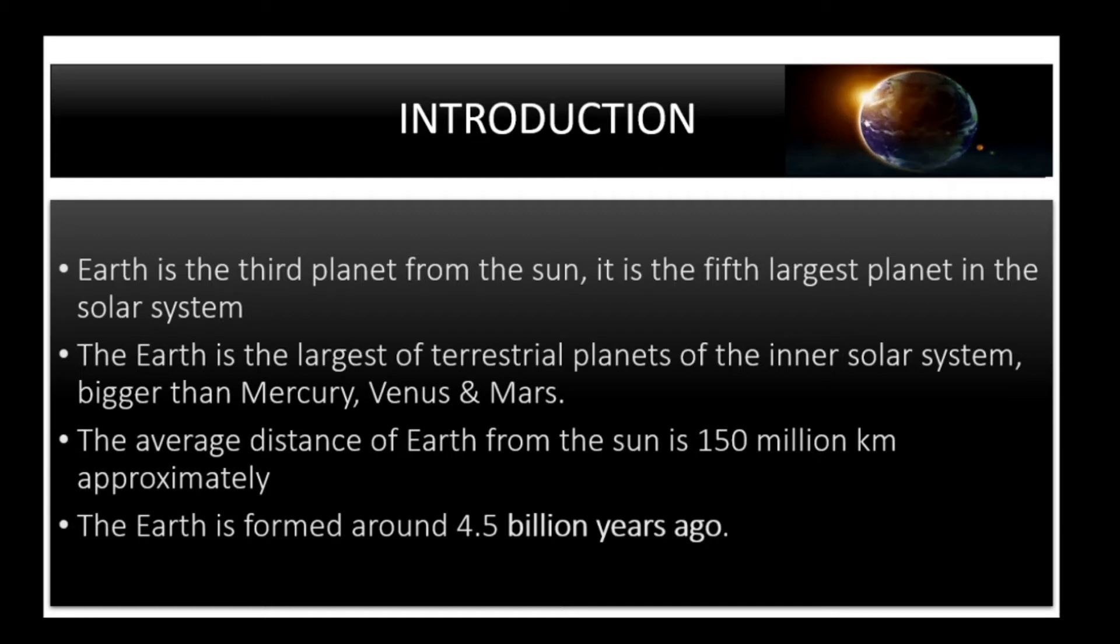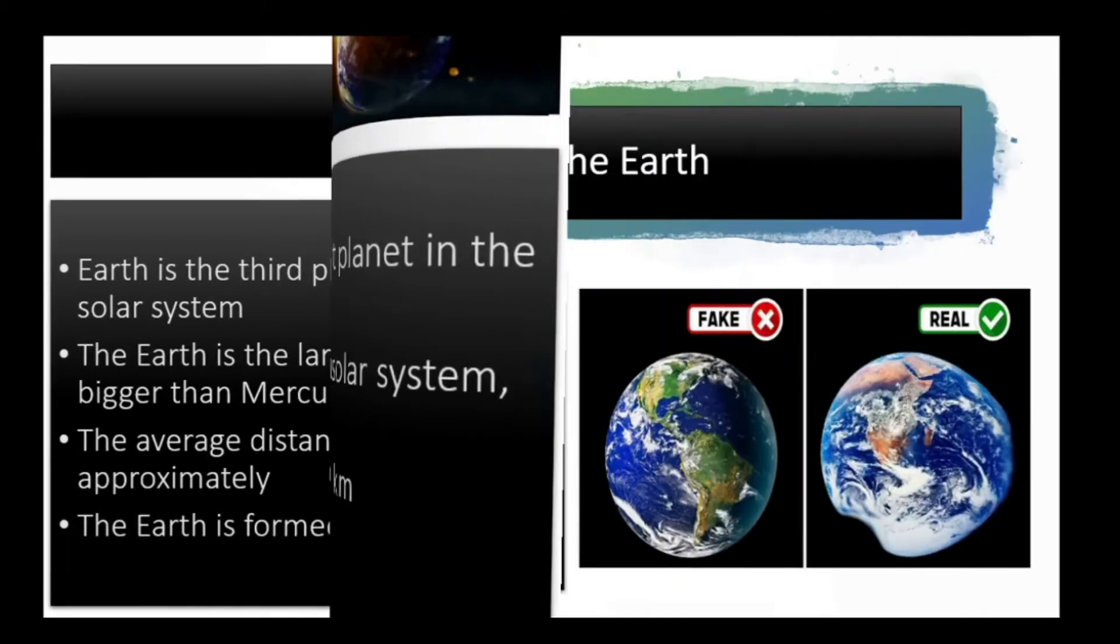It is bigger than Mercury, Venus, and Mars. The average distance of the Earth from the Sun is about 150 million kilometers. The Earth was formed around 4.5 billion years ago.